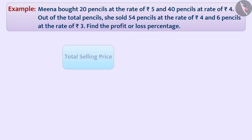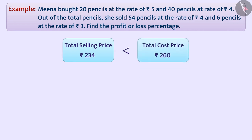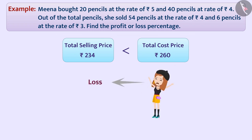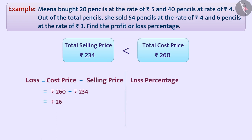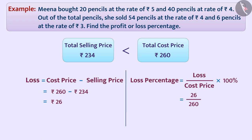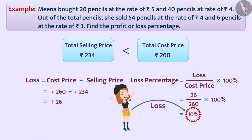Here, we see that the total selling price is less than the cost price. So, we can say that in this situation Meena has incurred a loss. Since loss = CP − SP = Rs 260 − Rs 234 = Rs 26. Since loss percentage = (Loss ÷ Cost Price) × 100% = (26 ÷ 260) × 100% = 10%. That is, Meena incurred a loss of 10%.